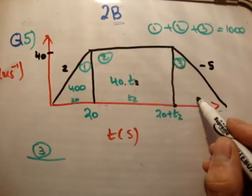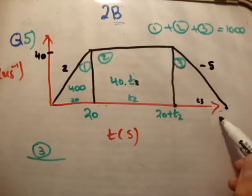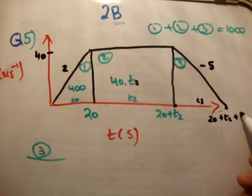And if we call this one here t3, as in from here to here, is t3 seconds, therefore at this point is 20 plus t2 plus t3. So let's do region 3.